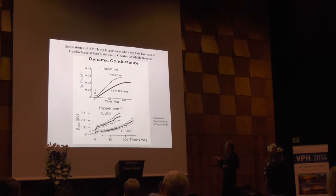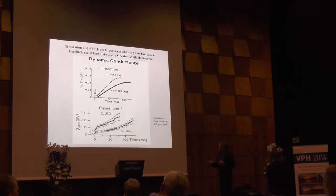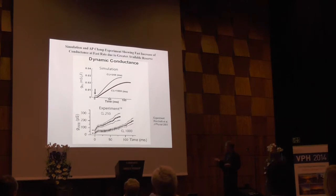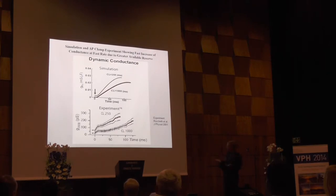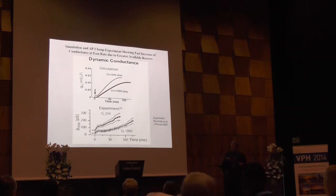I was at a meeting in Hungary with the European ion channel community, and Antonio Zaza from Milano showed me experimental data he couldn't understand: reproducible results showing no accumulation and no instantaneous jump at fast rate, but the current grows faster. I said I thought I knew the answer — we were doing those simulations at the time. I went home, simulated the protocol, and you can see the correspondence: almost no accumulation in the open state, but current grows faster at fast rate than slow rate.